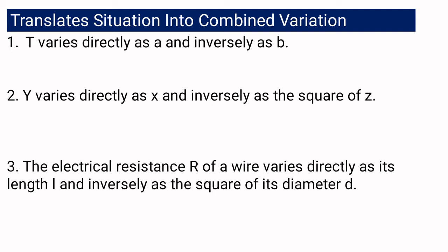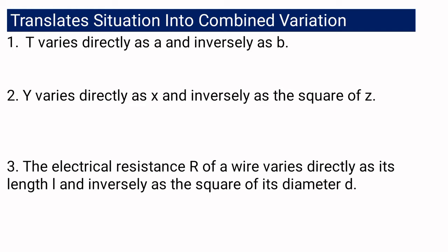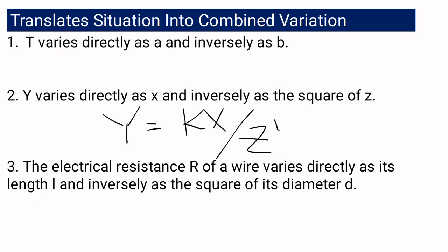For number 2, we have 'y varies directly as x and inversely as the square of z.' If we translate that into an equation, it will be written as y equals kx over z squared.